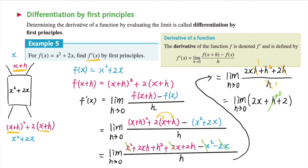Remember, as h approaches zero, this expression becomes two x plus two. So using the first principles, we found that the derivative of this function, f dash of x, is equal to two x plus two. That's the derivative.